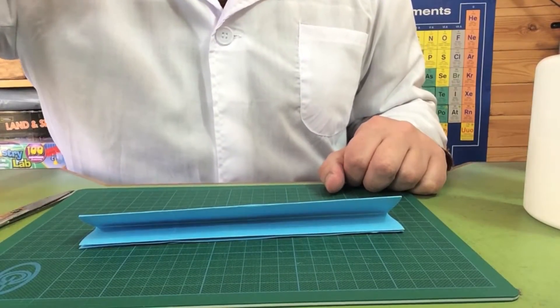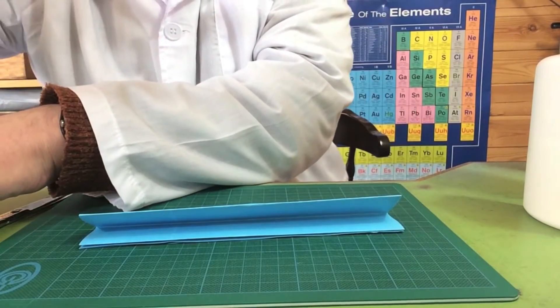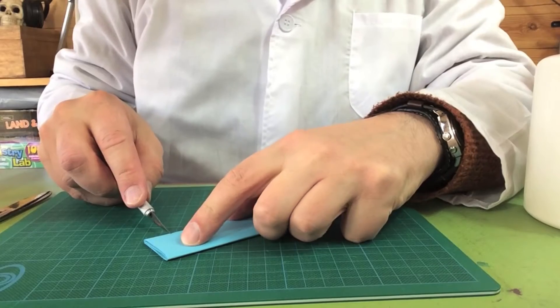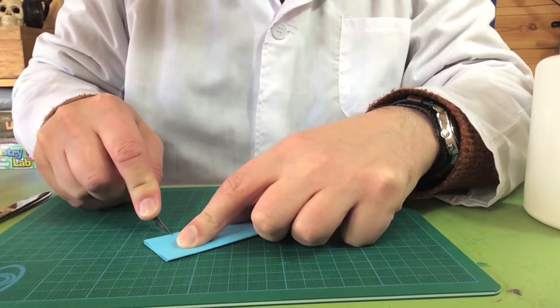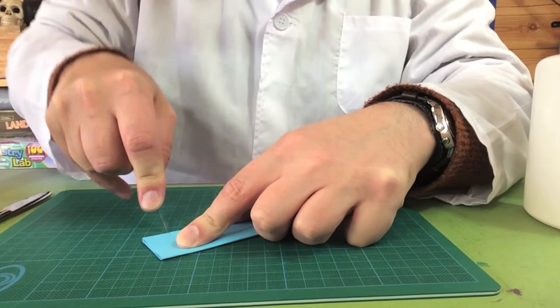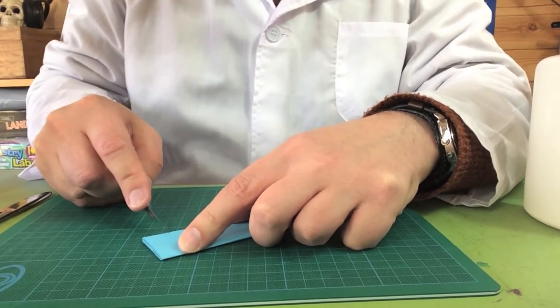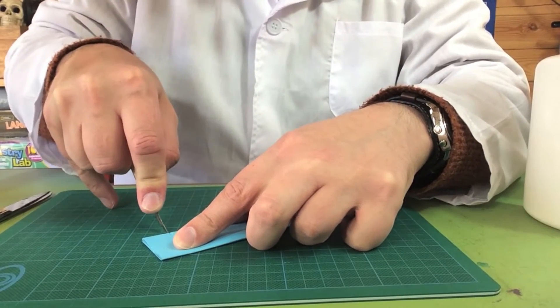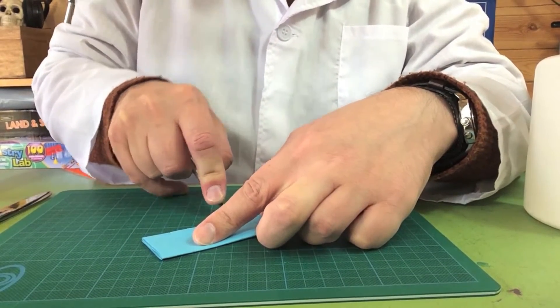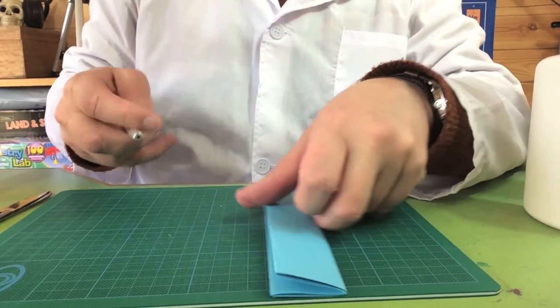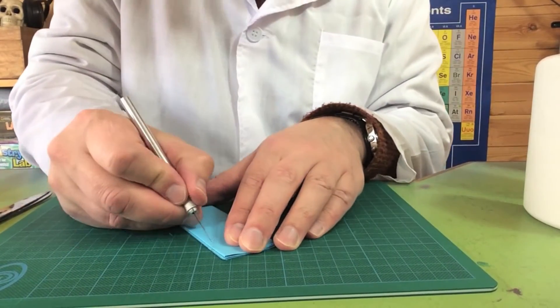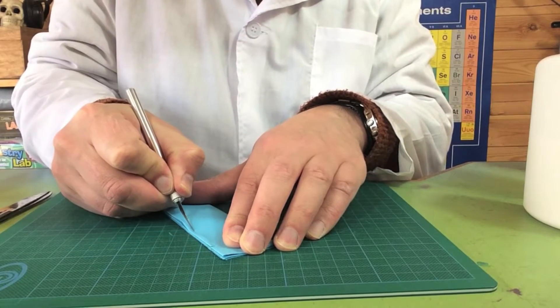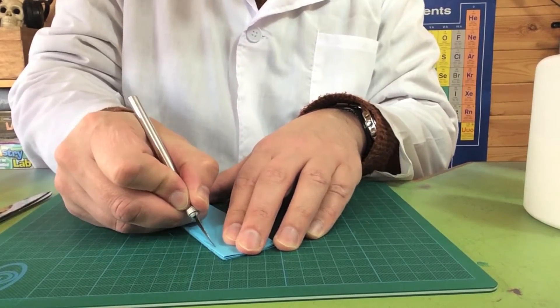Next, I need to get my scalpel, and this is where you'll want to make sure that you have got a responsible adult with you. Near the top, I'm going to make a little slot in the paper, being very, very careful. And I'll make another one just a little bit further down. And now I'm going to join those two by creating a line straight down.